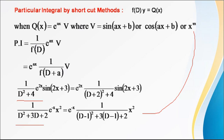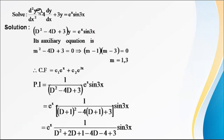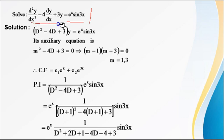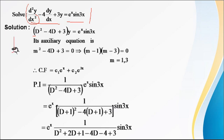See one example. Solve d²y/dx² − 4(dy/dx) + 3y = e^x · sin(3x). For any method, the complementary function (CF) is common. First, write in operator form: (D² − 4D + 3)y = e^x · sin(3x). Then equate f(D) = 0 to get the auxiliary equation.